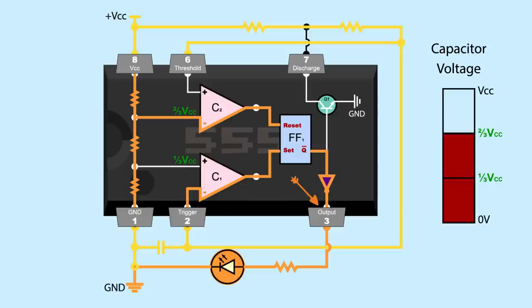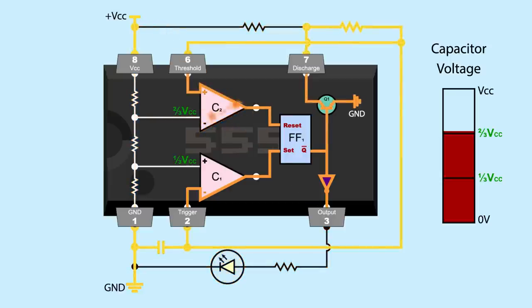When the capacitor charges to higher than 2/3 VCC, the voltage at pin 6 causes comparator 2 to output high, resetting the 555 output low, and the LED turns off. This also turns on the transistor of the discharge pin. This resistor prevents the capacitor from connecting to VCC, and instead forces it to connect through pin 7 to ground, and the capacitor begins to drain.